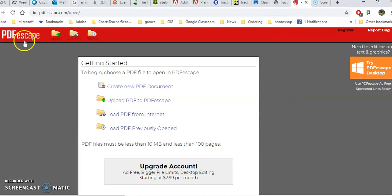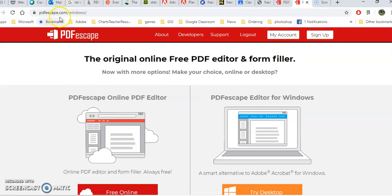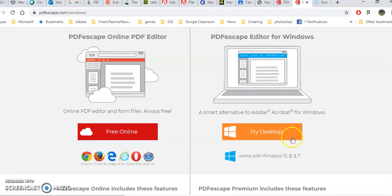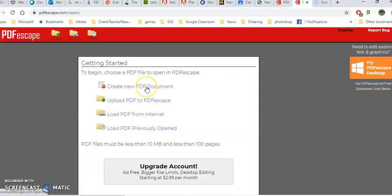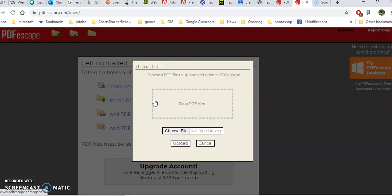So go ahead and you want to just go to PDFescape.com and then click on Free Online. I don't like to create accounts and if I'm working with students that's even not a safe thing to do. So I'm just going to go to Free Online and then I'm going to upload a PDF to PDFescape. I could actually create a PDF from scratch here if I wanted. But I'm going to upload.